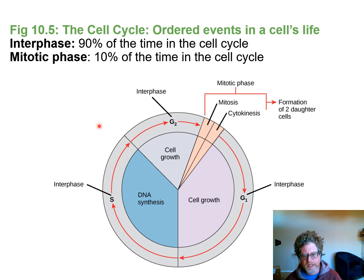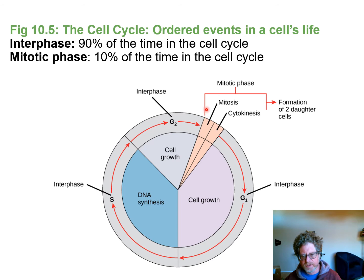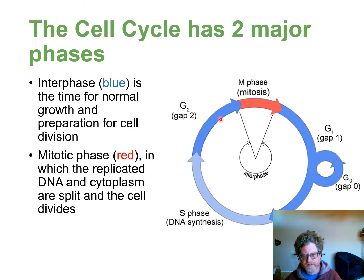The cell cycle is the process of cell division going from one cell to two cells. About 90% of the cell cycle is in what's called interphase, which is broken up into Gap 1, Gap 2, and DNA synthesis. The remaining 10% is the mitotic phase — the division of the DNA in the nucleus and the splitting of the cytoplasm. This is illustrated by showing interphase in blue and mitosis in red.